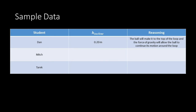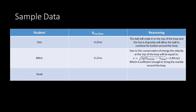A couple of my algebra-based physics students helped with this demonstration and gave their guesses for the height of the incline. Dan said the height should be 0.2 meters — noting this equals the height of the loop — reasoning that gravity would allow the ball to continue its motion around the loop. Mitch said 0.24 meters, using conservation of energy and the velocity formula, calculating approximately 0.89 m/s, which he thought sufficient to bring the ball around the loop.